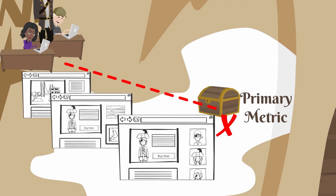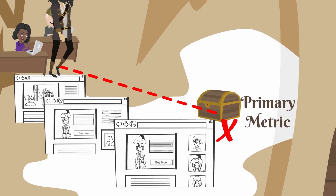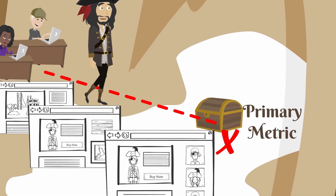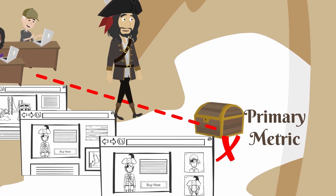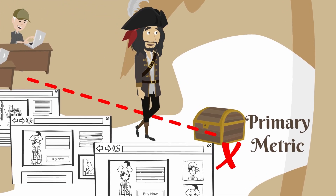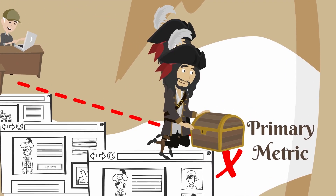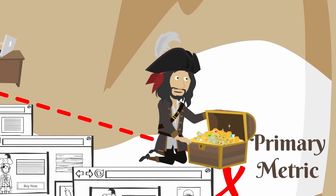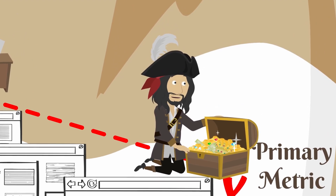Each tested change allows you to create a personalized roadmap for your visitors so they're better able to complete their journey. It is not a destination so much as a journey. If you want more visitors reaching your primary metric, improve the visitor journey with A/B testing.